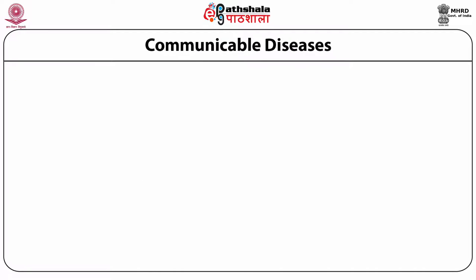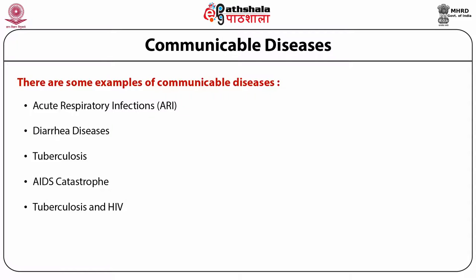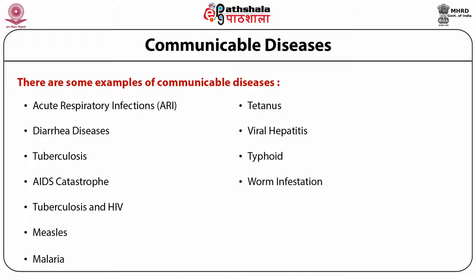Examples of communicable diseases include acute respiratory infections (ARI), diarrhea diseases, tuberculosis, AIDS, tuberculosis and HIV, measles, malaria, tetanus, viral hepatitis, typhoid, worm infection, leprosy, and dengue fever.